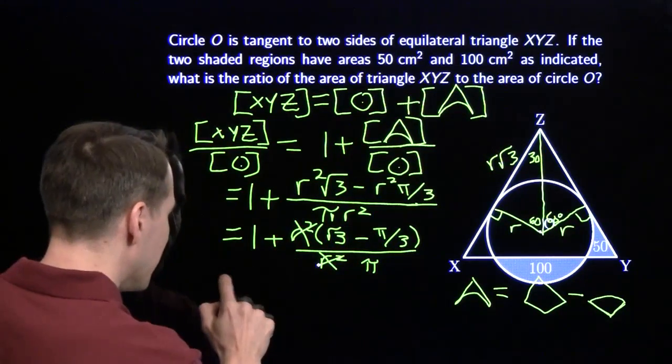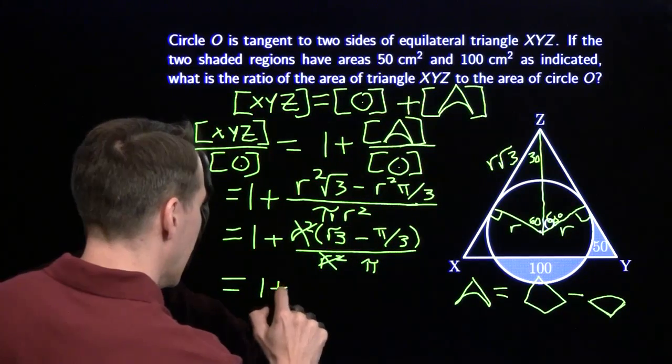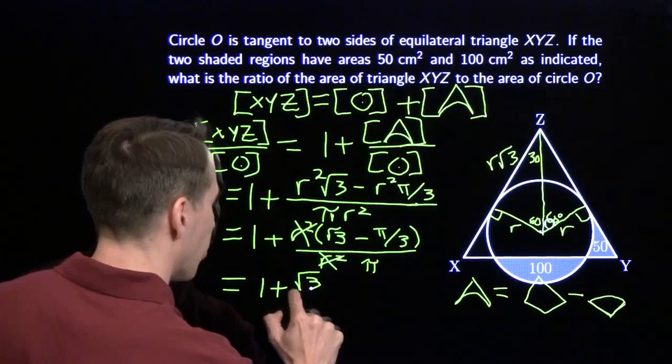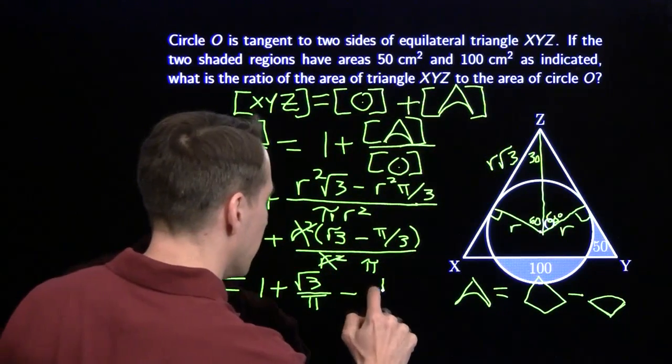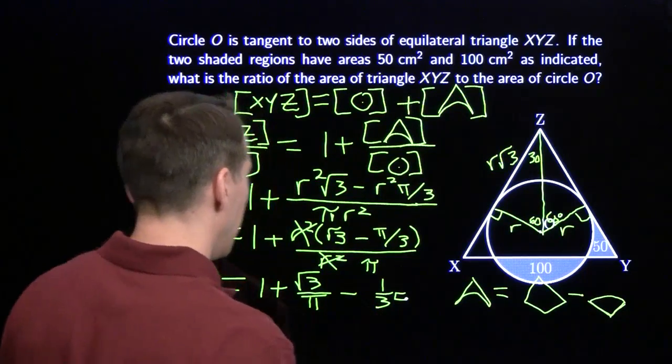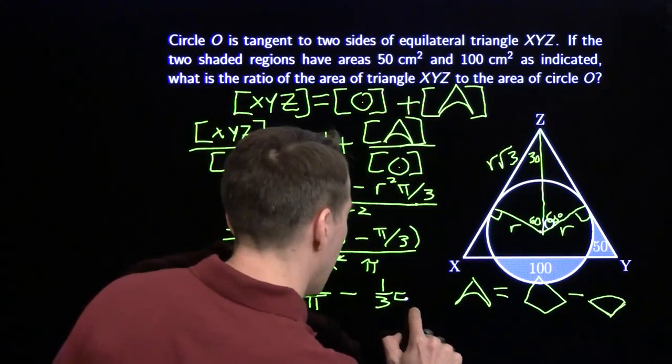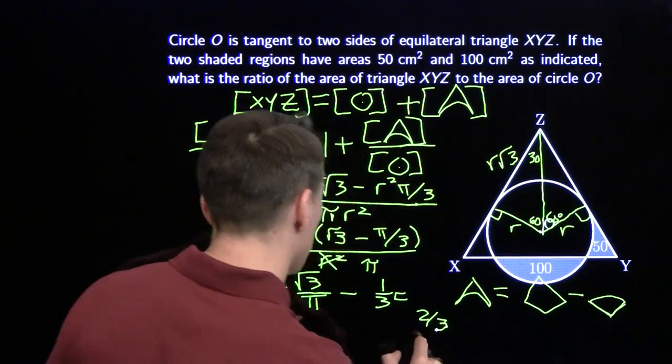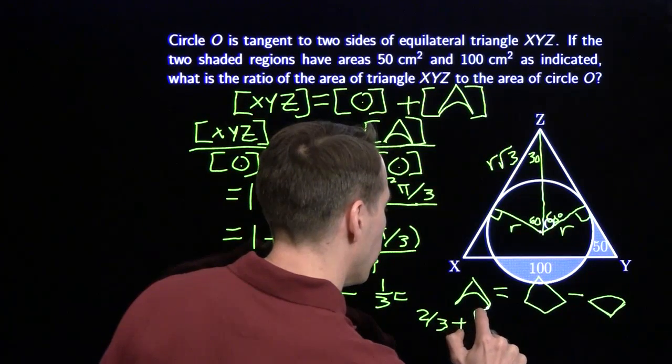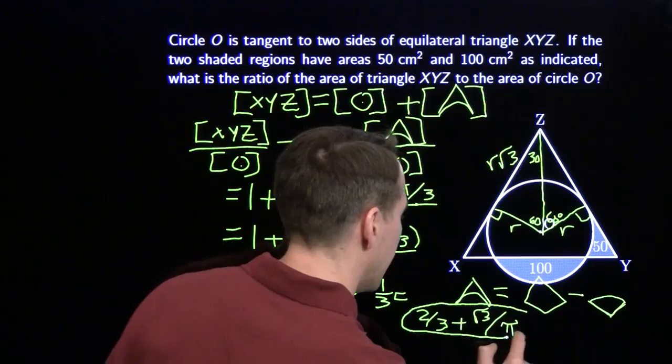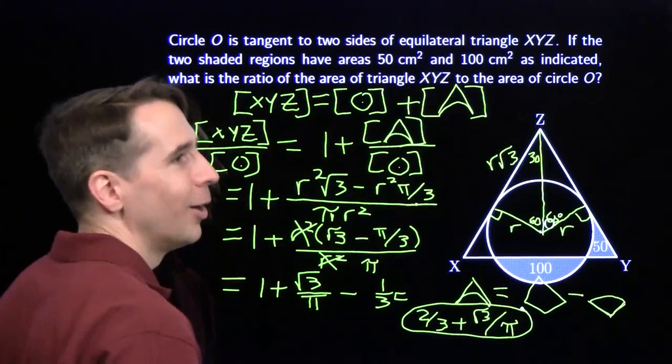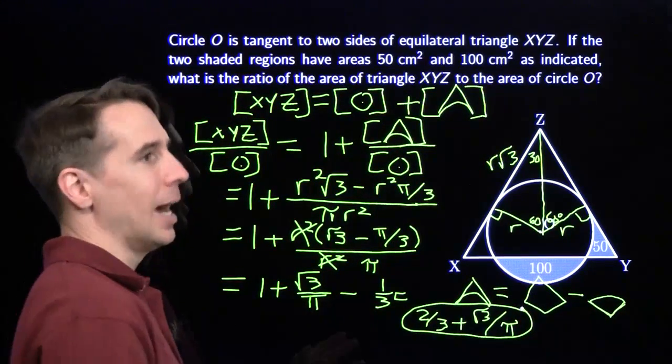Beautiful. Then we can simplify this a little bit. And we get 1 plus the square root of 3 over pi minus, the two pi's cancel, minus one third. Finally, we can simplify that. That is just two thirds plus root 3 over pi. All that without Harv. Oh yeah, you were really helpful by not being helpful.